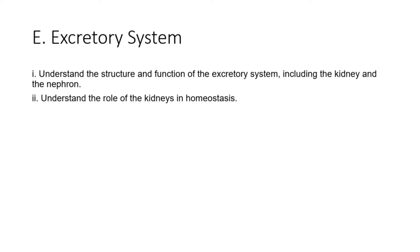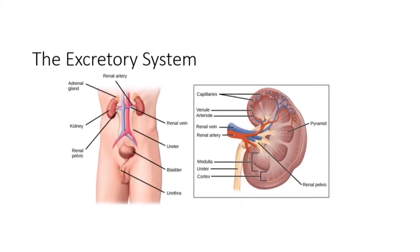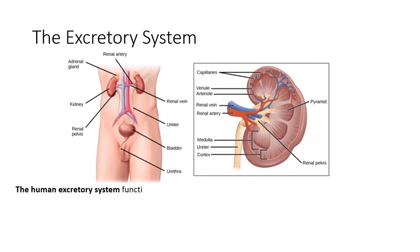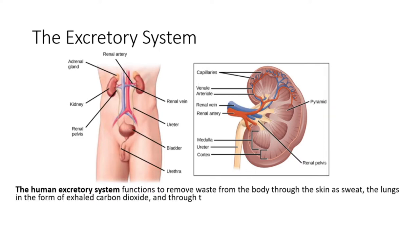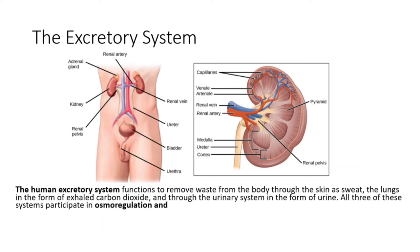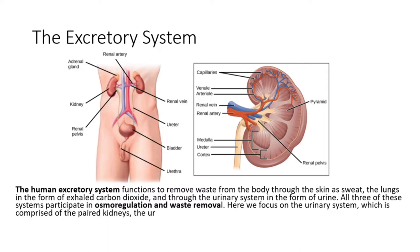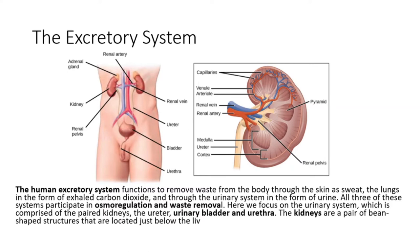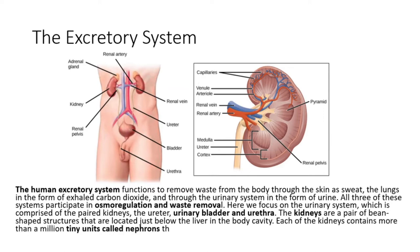After food has been digested it needs to be excreted, which is all down to the excretory system. The human excretory system functions to remove waste from the body through the skin as sweat, the lungs in the form of exhaled carbon dioxide, and through the urinary system in the form of urine. All three of these systems participate in osmoregulation and waste removal. Here we focus on the urinary system, which is comprised of the paired kidneys, the ureter, urinary bladder, and urethra. The kidneys are a pair of bean-shaped structures located just below the liver in the body cavity. Each kidney contains more than a million tiny units called nephrons that filter blood containing the metabolic wastes from cells.